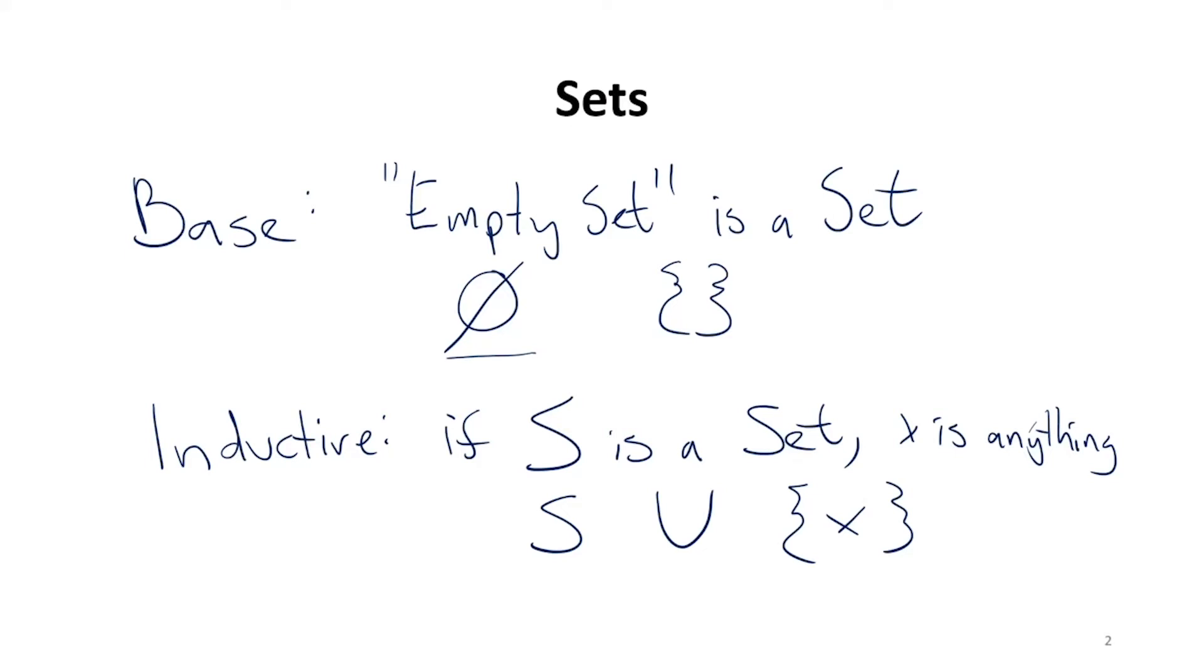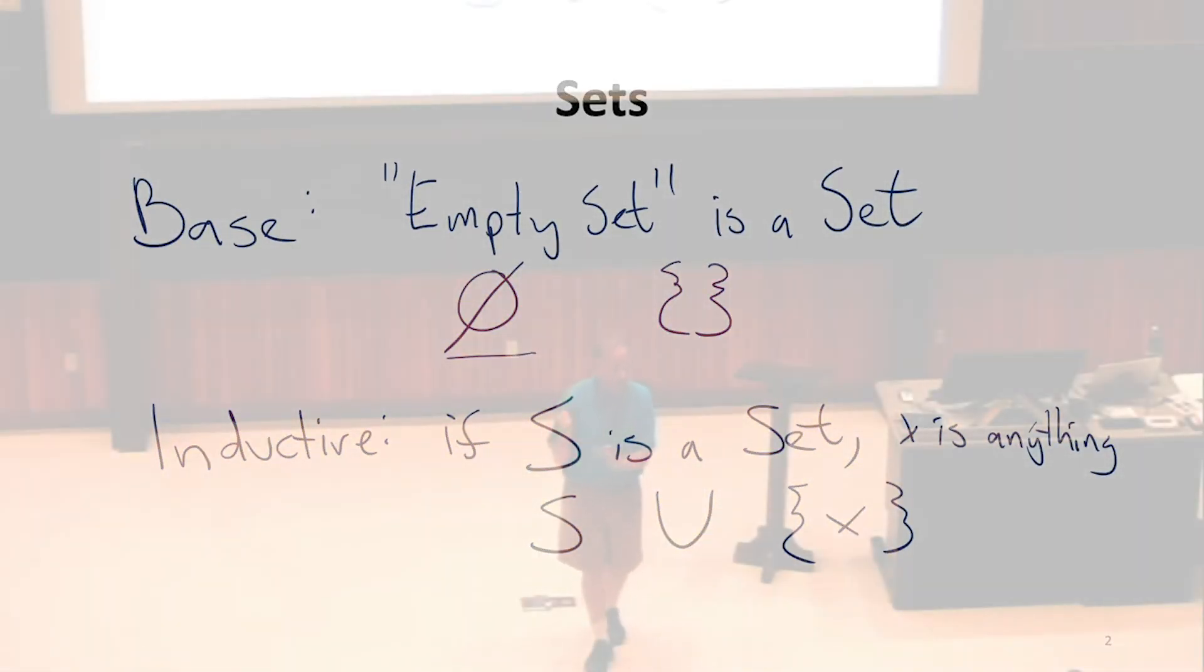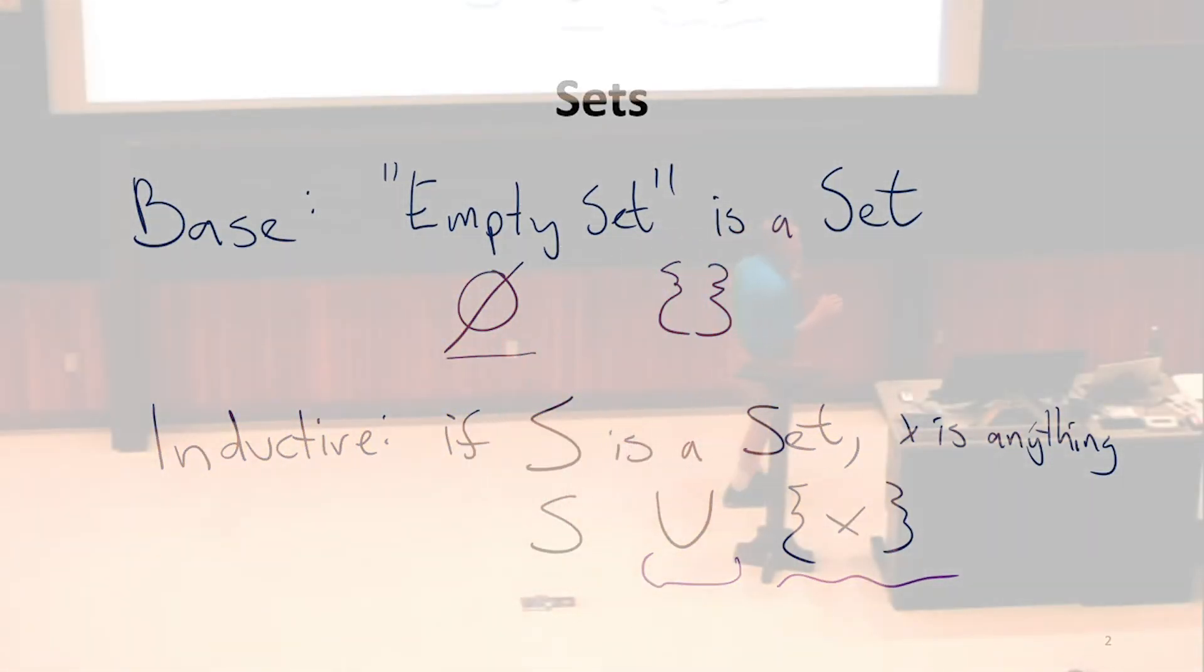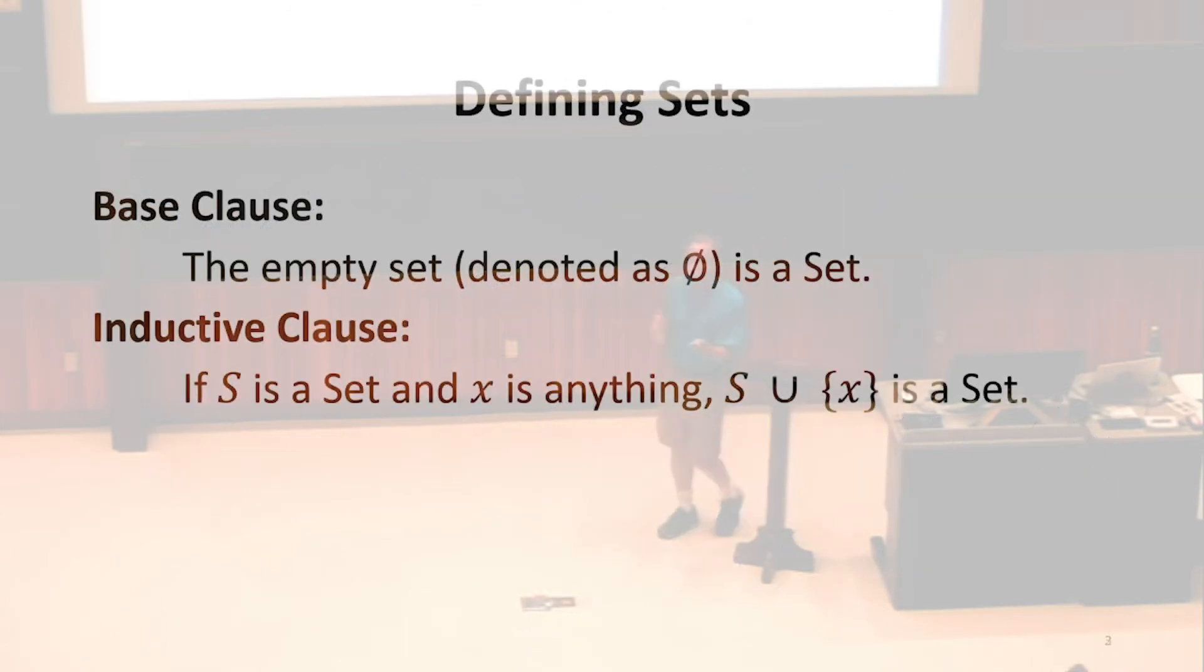This would make us a little nervous and uncomfortable. Our constructive definition of set is assuming we already know how to make a singleton set, and we already know what union means. If we were really building things up from scratch, we would have to define those things in a way that allowed us to use them. As an intuitive constructive definition of a set, this makes sense.